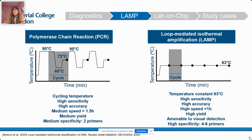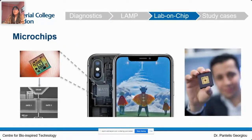These advantages make LAMP very suitable for point-of-care applications, due to the fact that thermal cycling is not required, which reduces the complexity of the hardware needed. On the other hand, microchips based on CMOS — Complementary Metal Oxide Semiconductor — is a technology found in your cell phone, and it offers several opportunities for diagnostic purposes such as scalability, low-cost production, industrialization, and integration of circuit design.